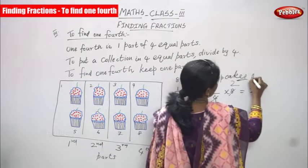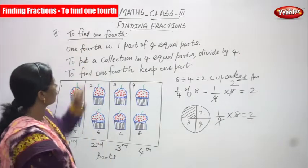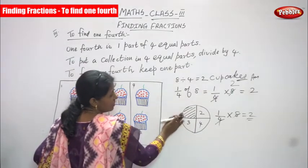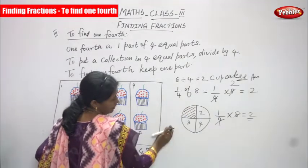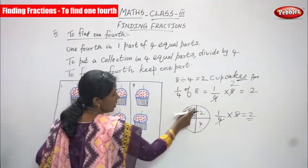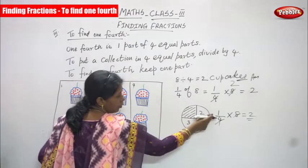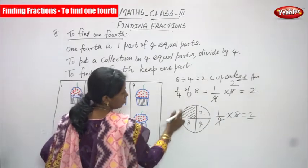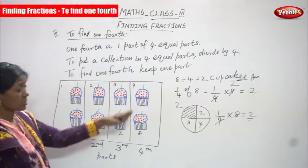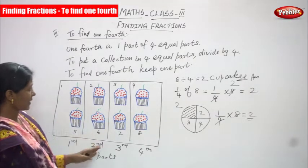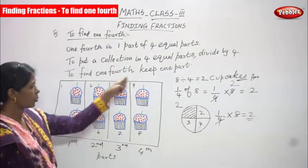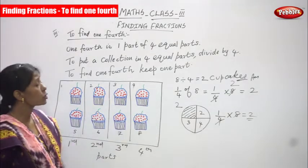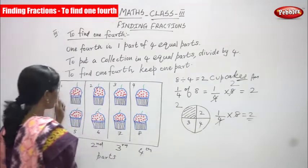To find one fourth: one fourth is one part of four equal parts. This is a whole circle — I cut it into four equal parts but I have taken only one. You can consider this as one part of the cupcakes. So one by four into eight: cancel it and you can get two. One fourth part gives two cupcakes. Total number of cupcakes is eight, divided into four equal parts, and in each part there are two cupcakes.